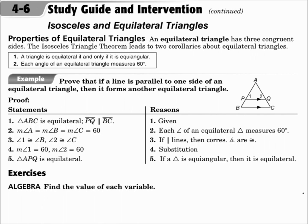When triangles are equilateral, all three sides are congruent. And when all three sides are congruent, all three angles are also congruent. When all three angles are congruent and add up to 180, each angle has a 60-degree measure. So an equilateral triangle is also equiangular, and each angle measure is 60 degrees.